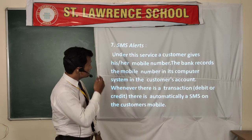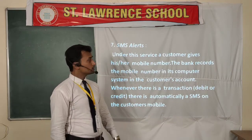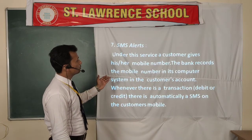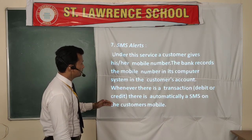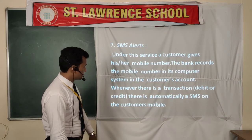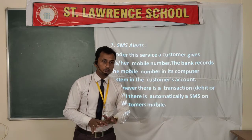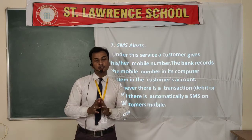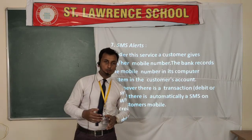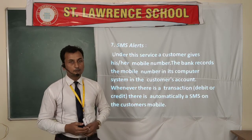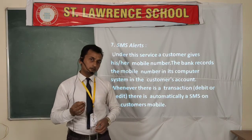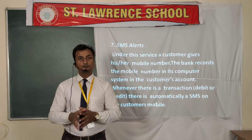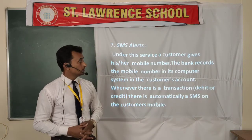Next is the SMS Alert. Under this service, the customer gives their mobile number and the bank records it in the computer system linked to the customer's account. Whenever there is a transaction — debit or credit — in your account, the bank will send an SMS to you. For example, if you go to the ATM and withdraw money, the bank will send you information about how much was deducted from your account.